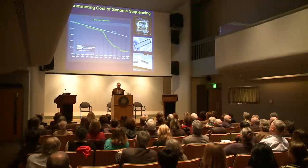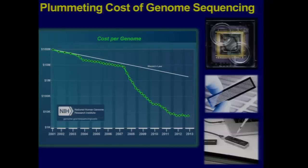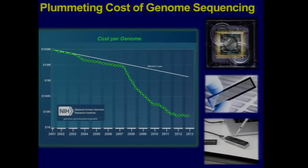Also very exciting is a new technology coming out this year that's starting to hit some research labs this month. It's a technology that literally plugs into the USB port of a laptop and will allegedly — we'll see how good it is — sequence a human genome in about a day. Truly remarkable. You could do that from a laptop such as the one I'm using here to show you these images.